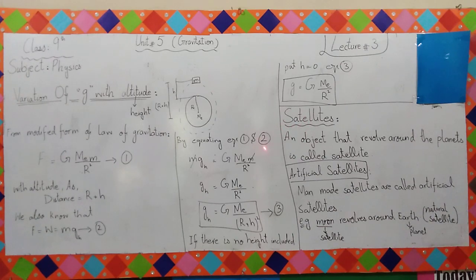Next is satellite. What is satellite? An object that revolves around the planet is called a satellite. Like an example, moon revolves around the Earth. The moon is a satellite and the planet is Earth. This is a natural satellite because the Earth and moon are made by nature.